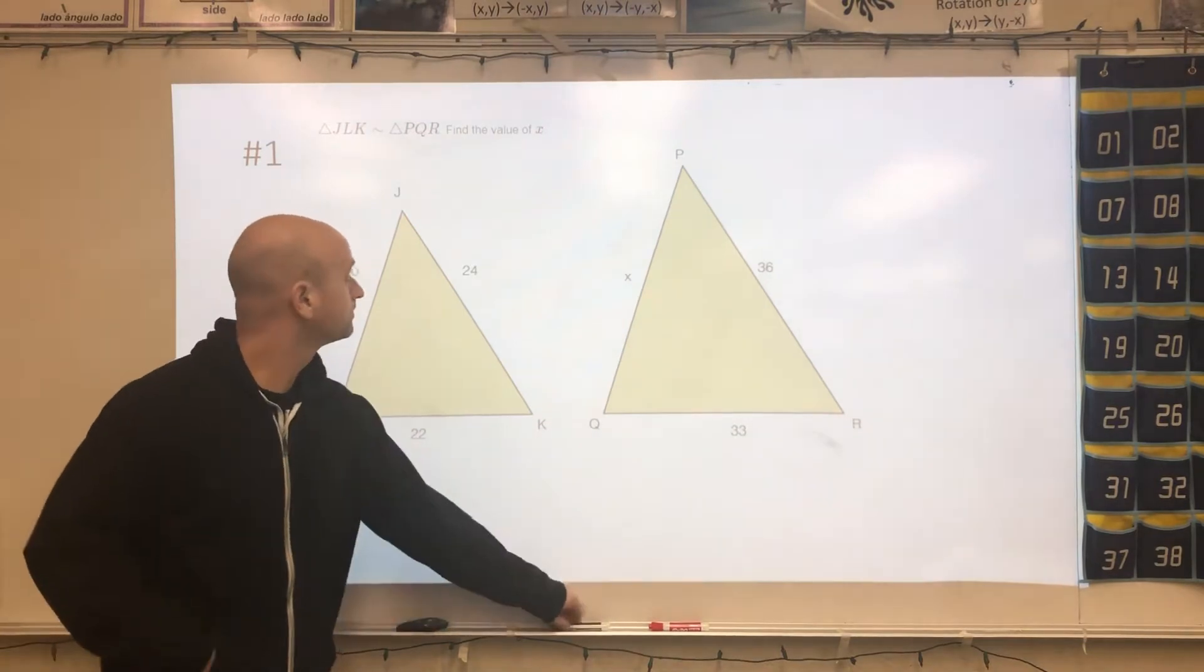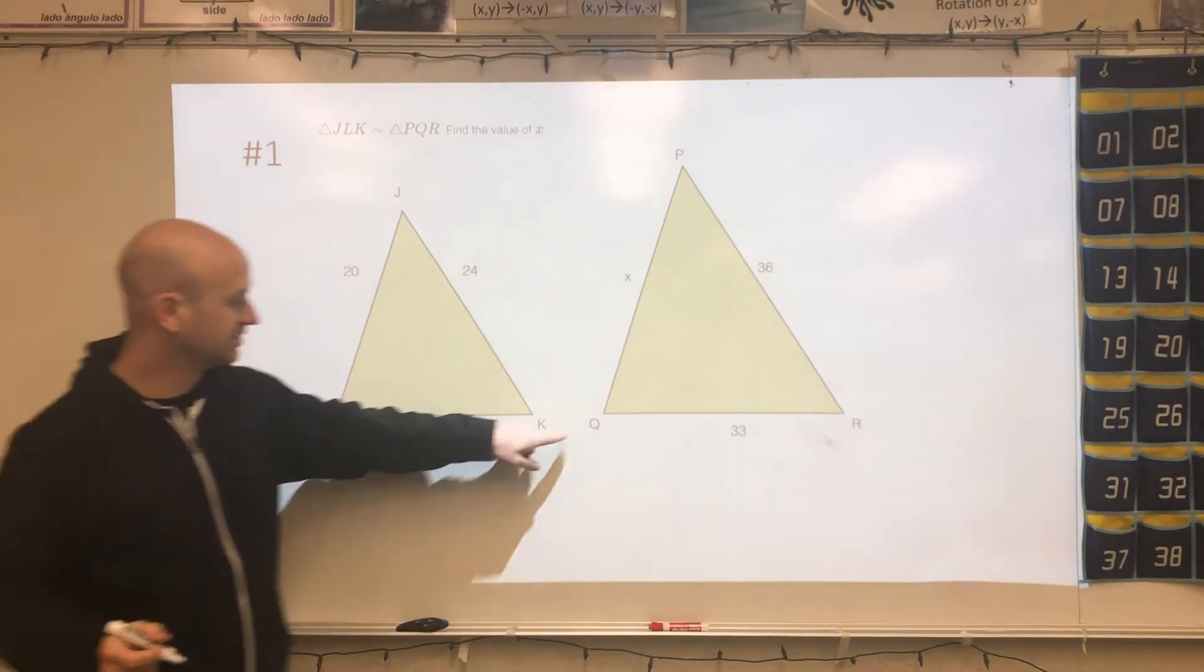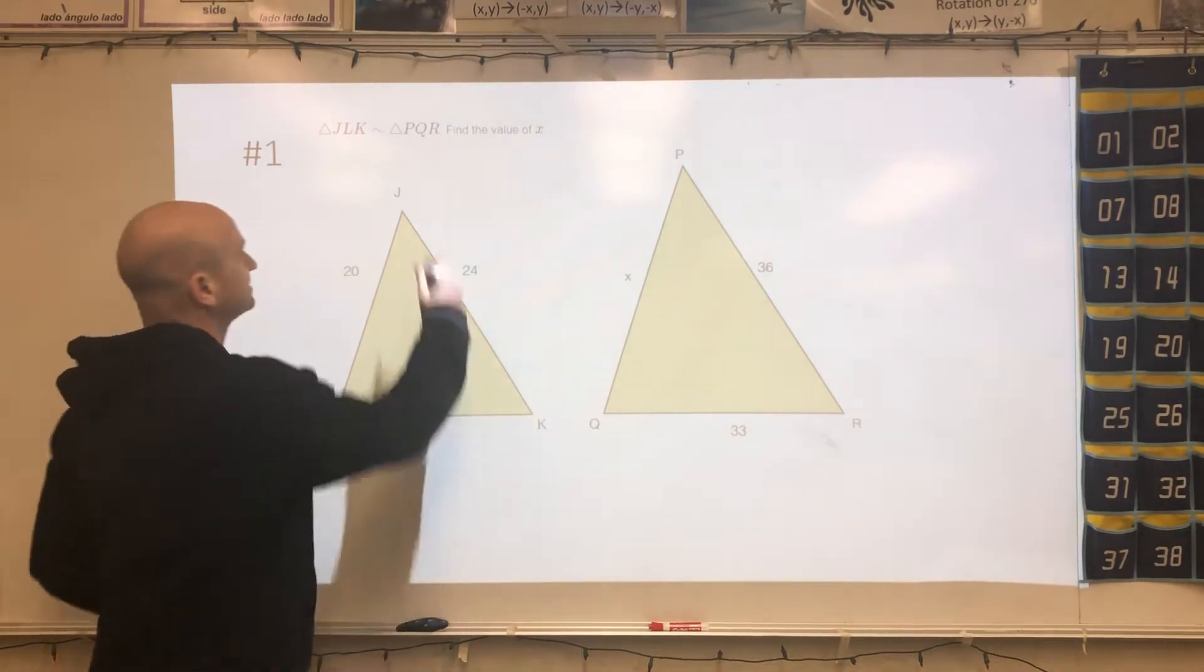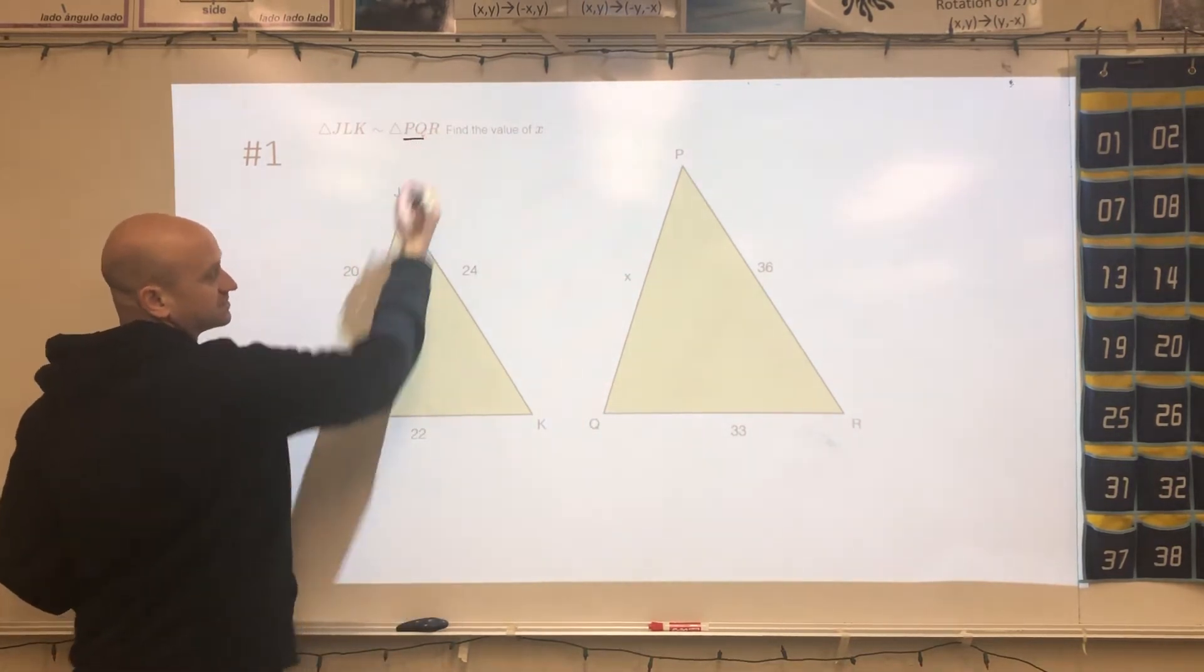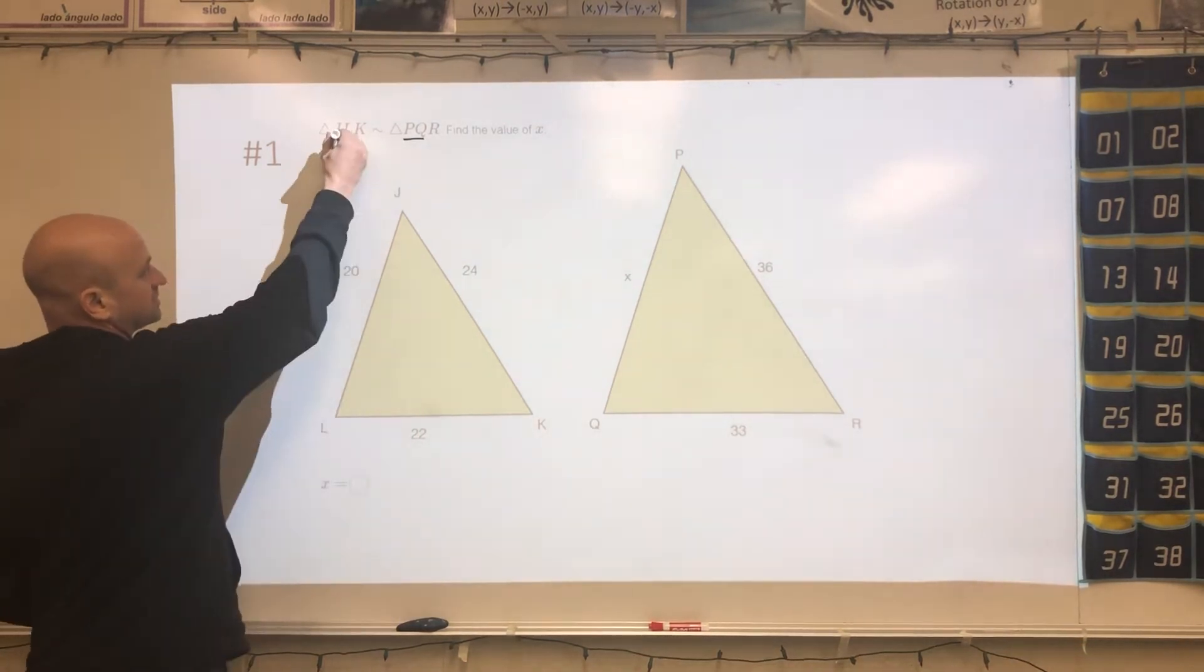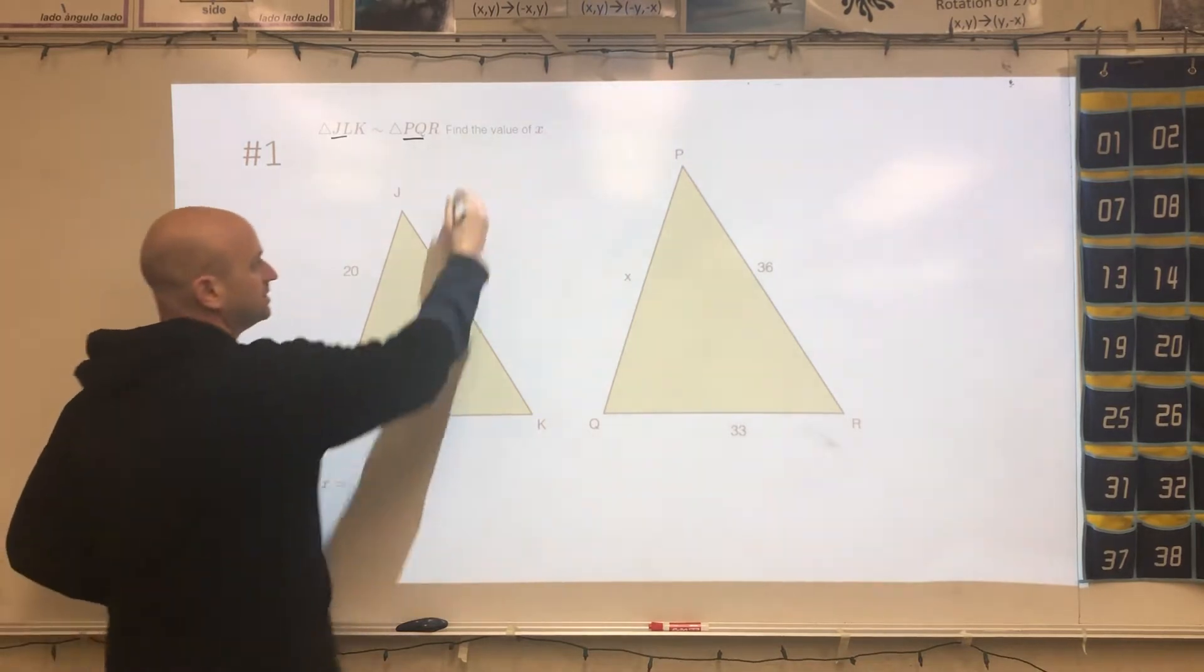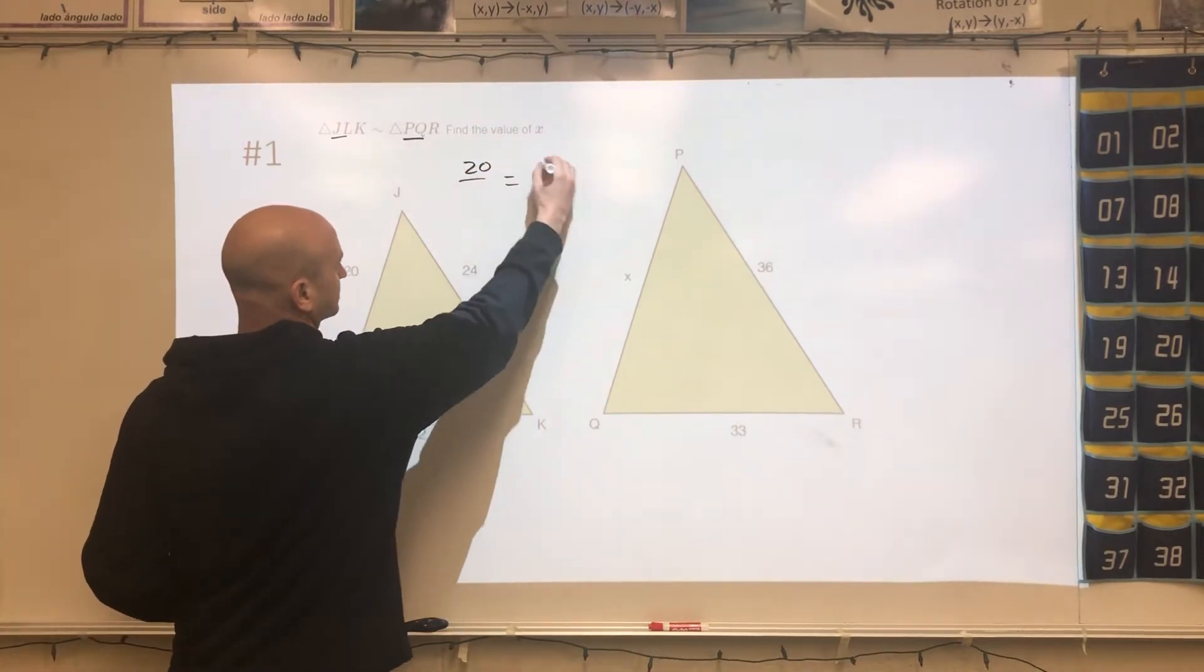So for problem number one, they give us the similarity statement, and if we look here, QP is X. So what I would do first is locate QP and what it is similar to. In this case, QP is going to be similar to JL, which is 20.